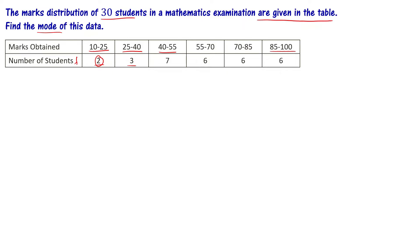Mode is a particular observation. For ungrouped data, mode is simple — it is the observation that appears the most number of times. The observation that occurs most frequently is the mode of that data.